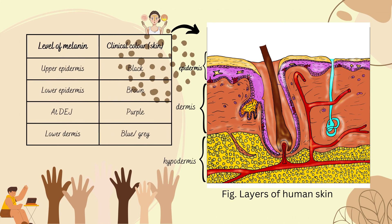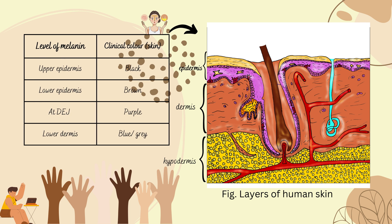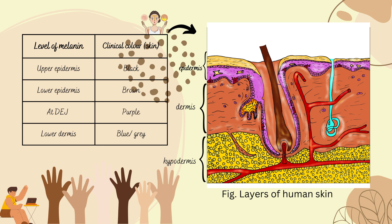Looking at the histopathological level of melanin in skin, it varies in different segments. At the upper epidermis level, melanin appears black in color; in the lower epidermis it shows brown color; at the dermoepidermal junction it shows purple color; and in the lower dermis it shows blue or gray color. The next slide shows the epidermis layer of human skin.